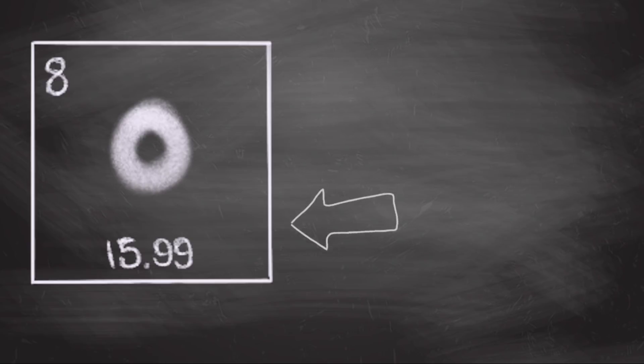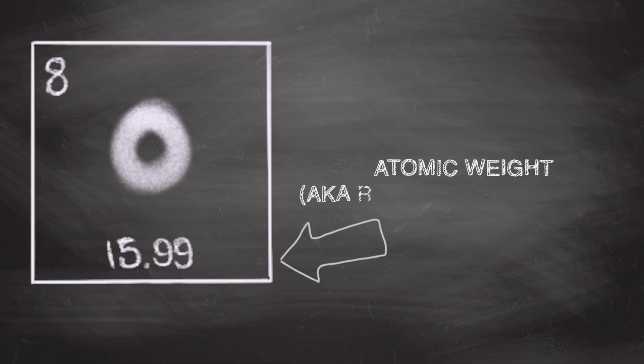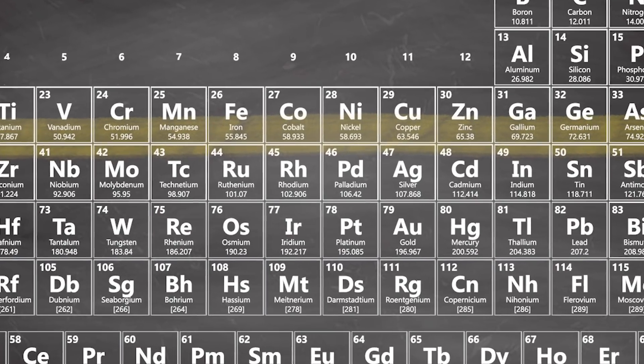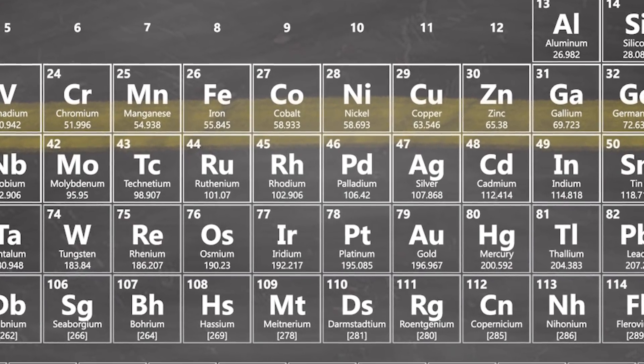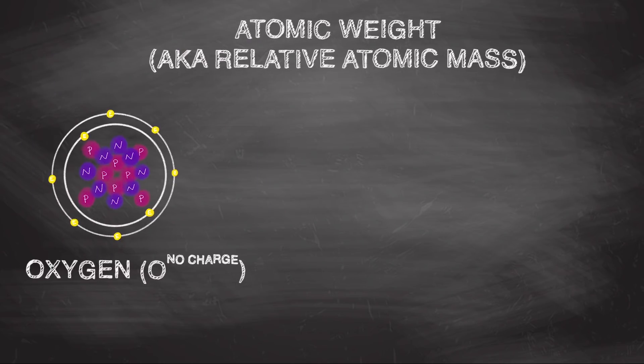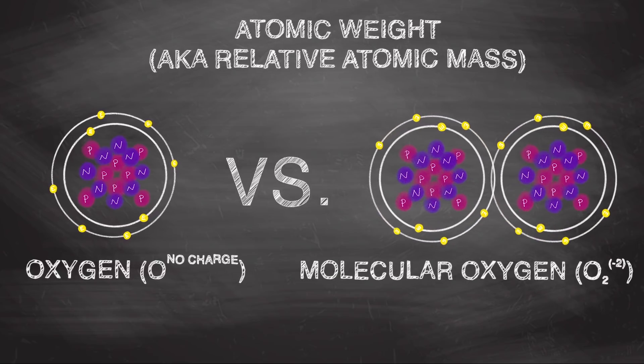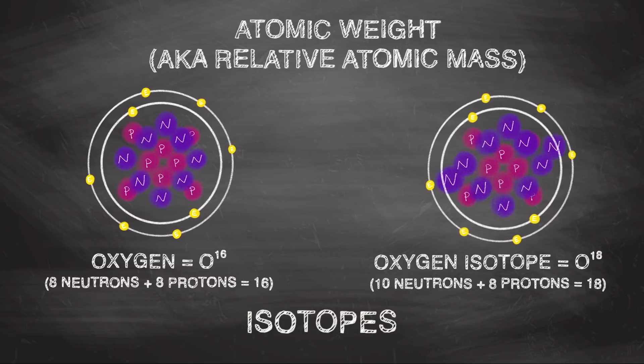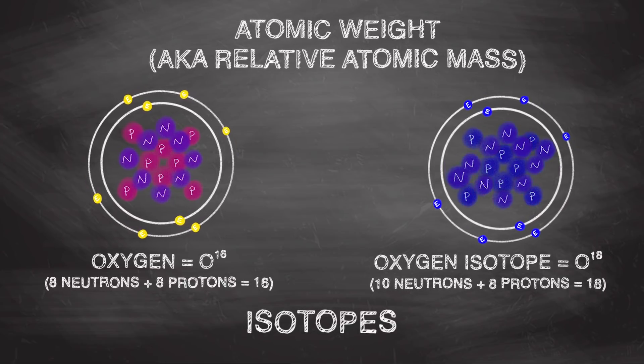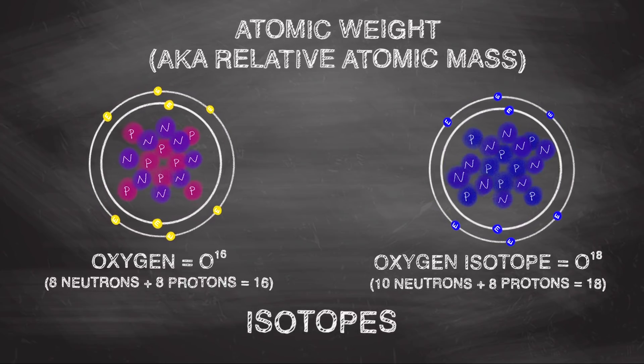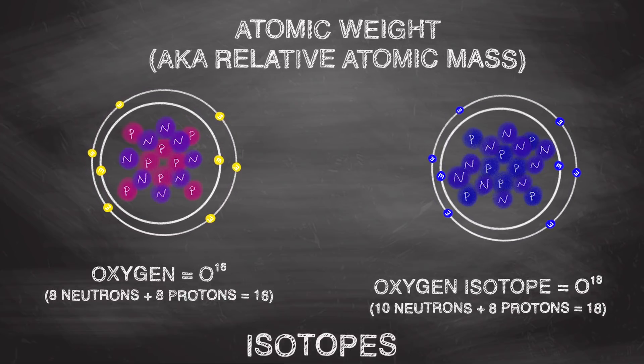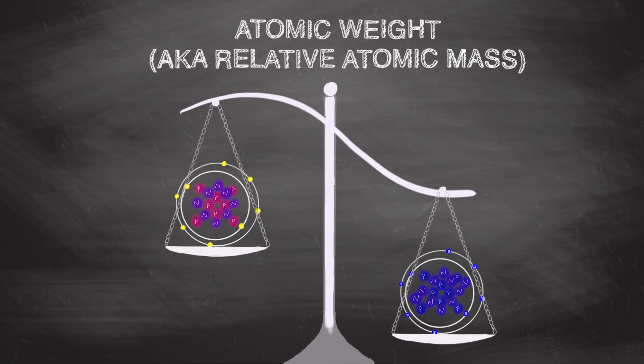And that brings us to the number at the bottom, which is atomic weight. You may notice that this number has digits after the decimal point, and that's because it's actually an average. Just how different ions of an element may have different numbers of electrons, isotopes of an element have different numbers of neutrons. They still have the same number of protons, otherwise it would be a totally different element. But different isotopes of that element have different numbers of neutrons, meaning each isotope has a different mass.